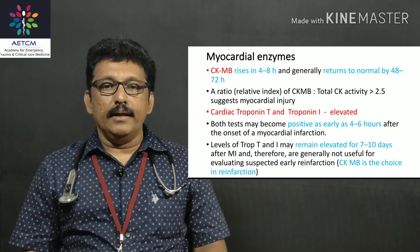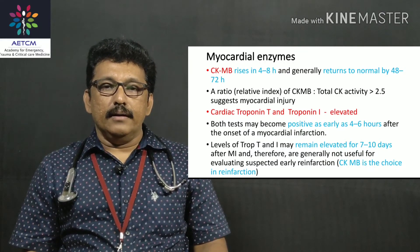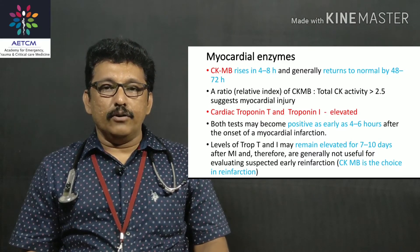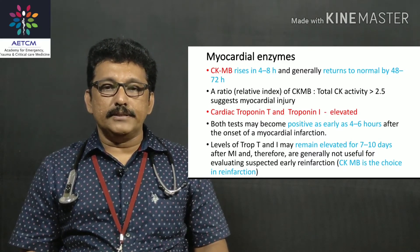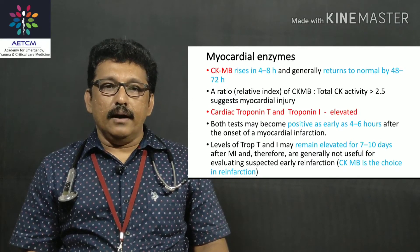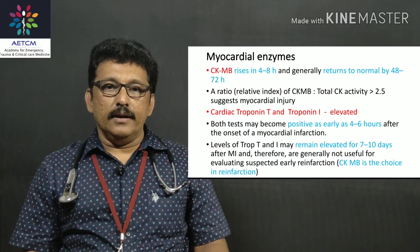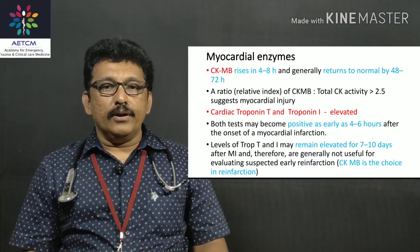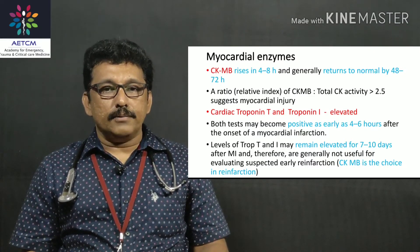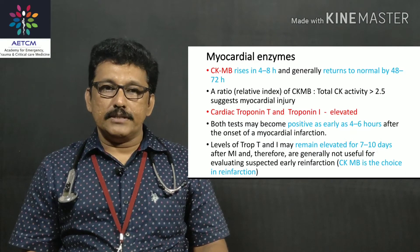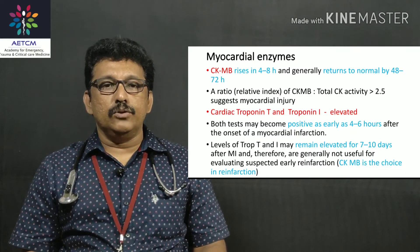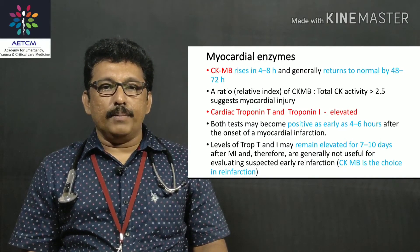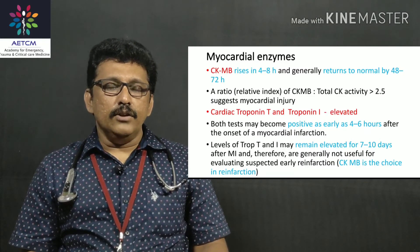In a patient with acute MI who develops reinfarction during the admission period, CKMB is the best investigation for that condition. For initial acute MI diagnosis, Troponin I or T is the best investigation. Most emergency rooms use both CKMB and Troponin T and I.